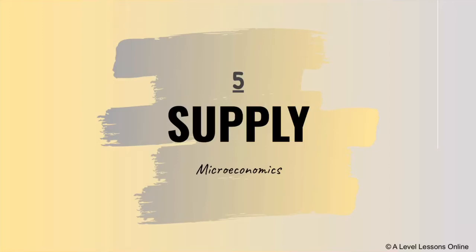Hi guys, we're back with another video from A-Level Lessons Online. I'm going to be covering microeconomics part 5. We are back with supply. I'm going to move on to supply, then PES, and then we're going to go into price adjustment programs, all your graphs, that kind of good stuff. I've already gone through demand — the link will be up in the top right corner of the screen, go check it out if you have not.